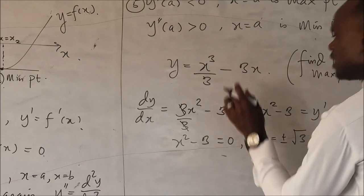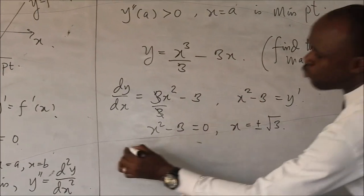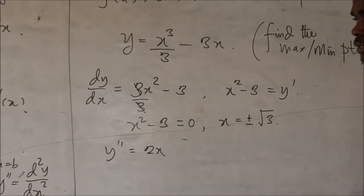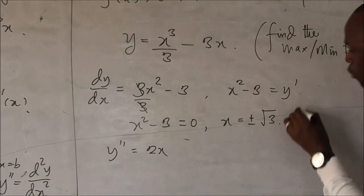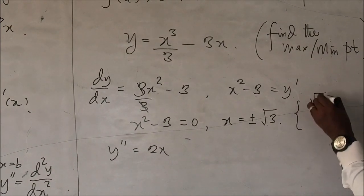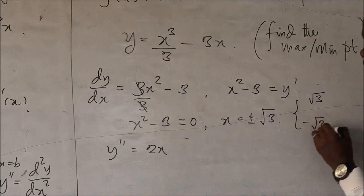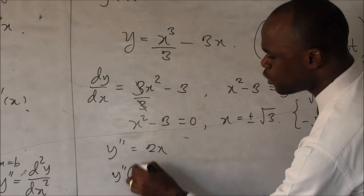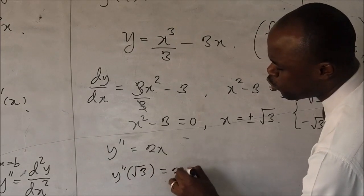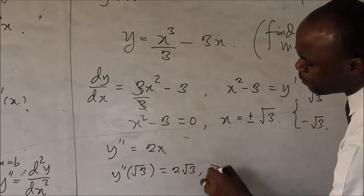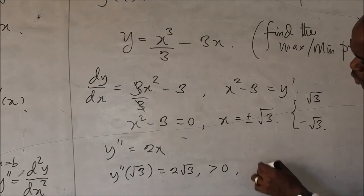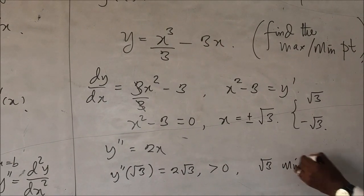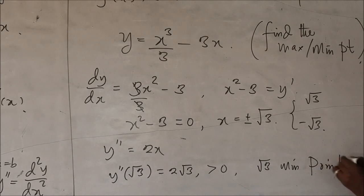The next thing is to differentiate again. So, let's differentiate this function again. So, y prime prime is two x. Just two x. So, we are going to put these two points. You know these two points is root three and minus root three, into this. So, we are going to have y prime prime of root three is going to be two root three, which is positive. So, it means that root three is minimum point.